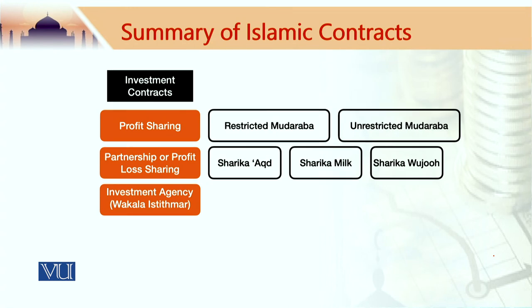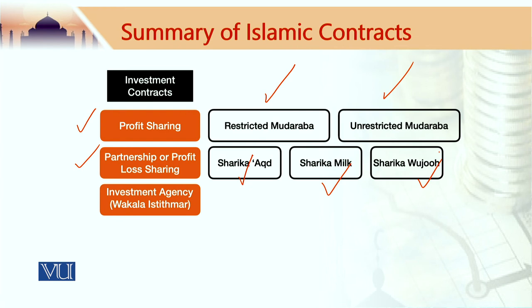Investment contracts include profit sharing contracts, partnership or profit-loss sharing contracts, and investment agency or Wakala Istithmar. Profit sharing is known as Mudaraba — it could be restricted or unrestricted Mudaraba, and the distinctions between these two would be explained in due time. Partnership contracts include Sharika Akt, Milk, and Wuju, and we would go into the details and characteristics in one of the forthcoming segments. Investment agency or Wakala Istithmar is becoming very popular in Islamic banking with a number of applications.